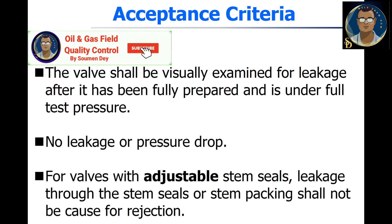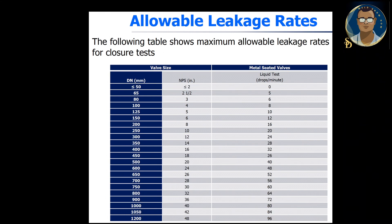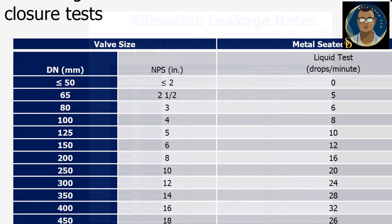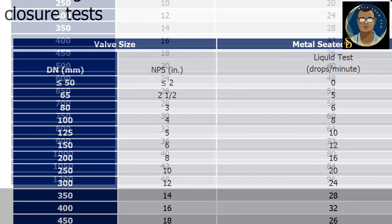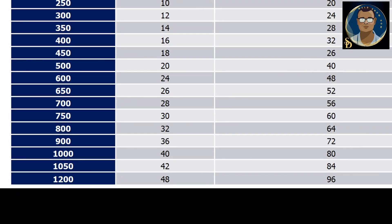Acceptance criteria: the valve shall be visually examined for leakage after it has been fully pressurized and is under full test pressure. No leakage or pressure drop is acceptable. For valves with adjustable stem seals, leakage through stem seals and stem packing shall not be cause for rejection. Regarding allowable leakage rate for closure or seat tests: for valve size less than 2 inch, zero drops per minute is acceptable. For example, for 10 inch, 20 drops per minute is acceptable, and for 48 inch, 96 drops per minute are acceptable.